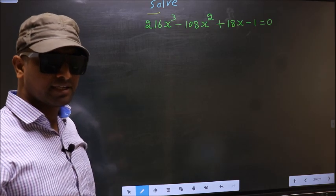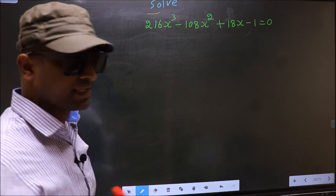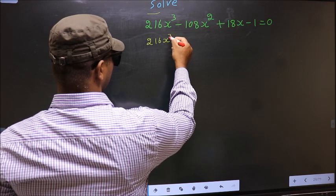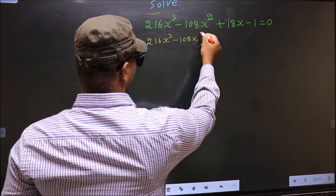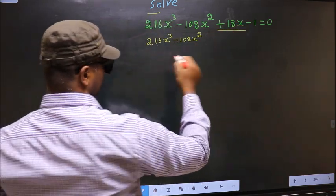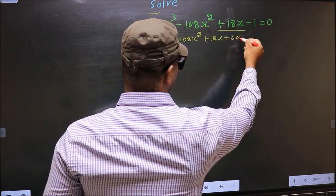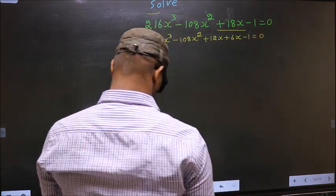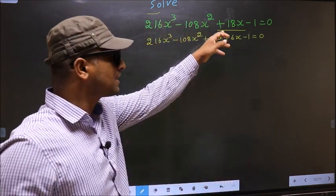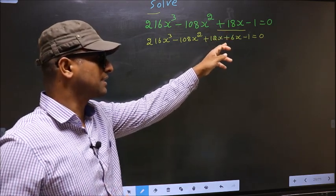For that we have to change the x term. Consider 216x³ minus 108x², and in place of plus 18x I write plus 12x plus 6x, minus 1 equal to 0. In place of plus 18x I have written plus 12x plus 6x.